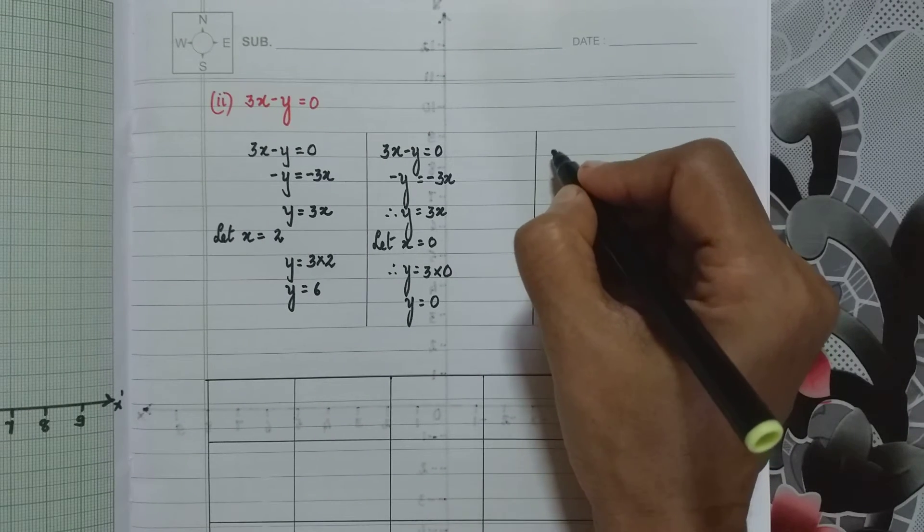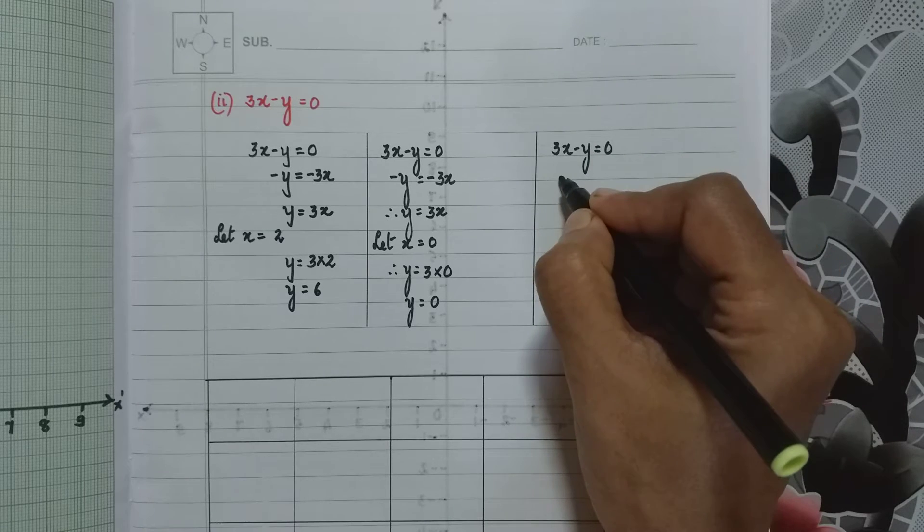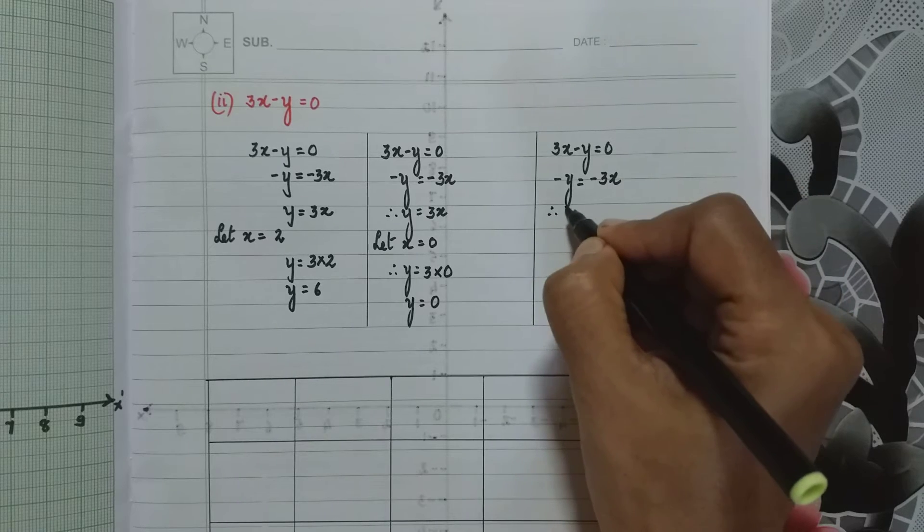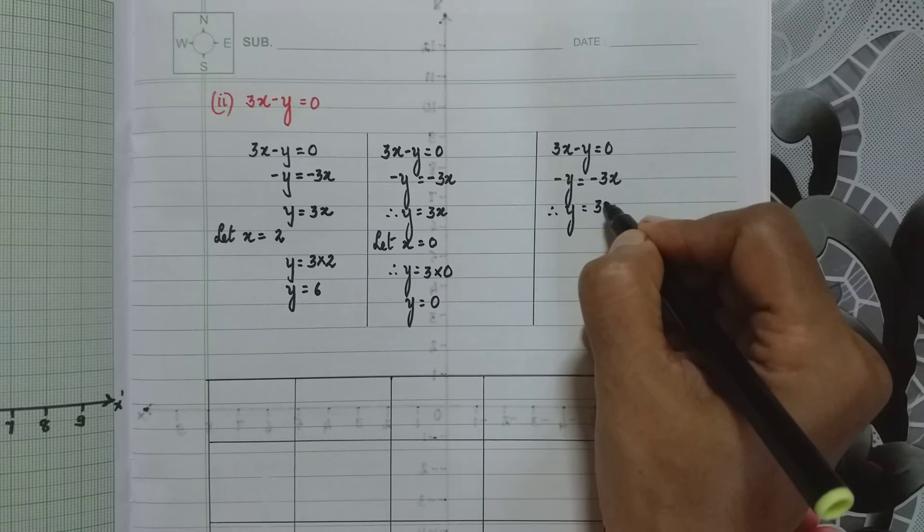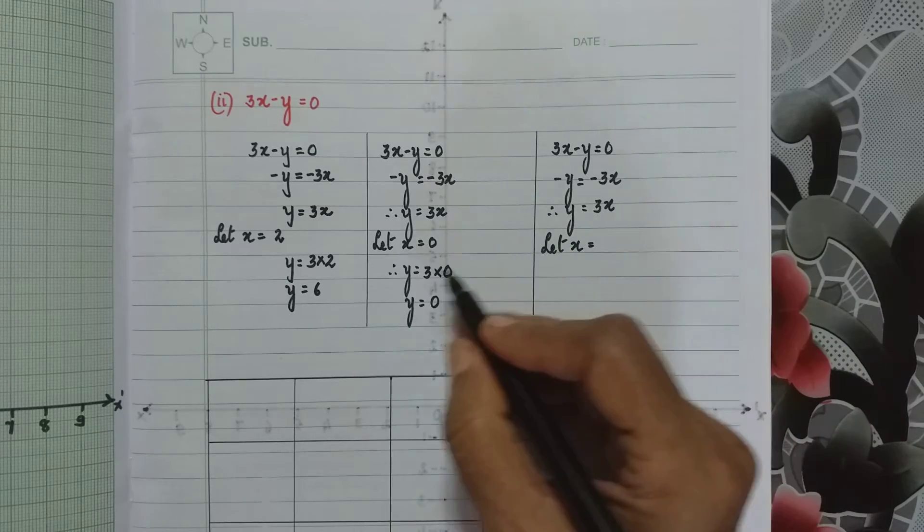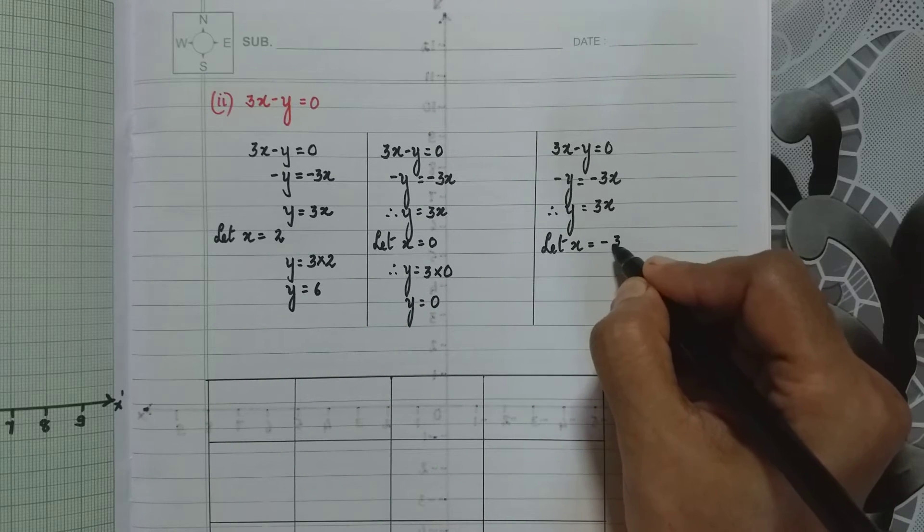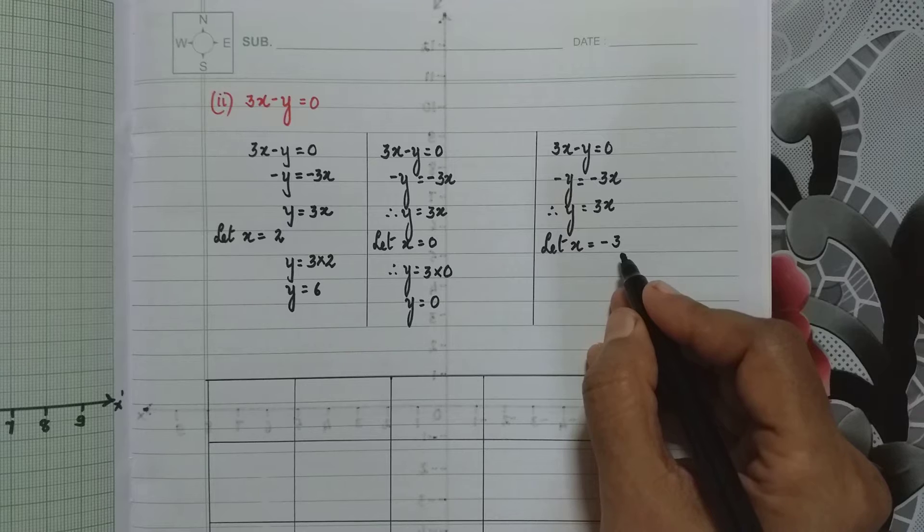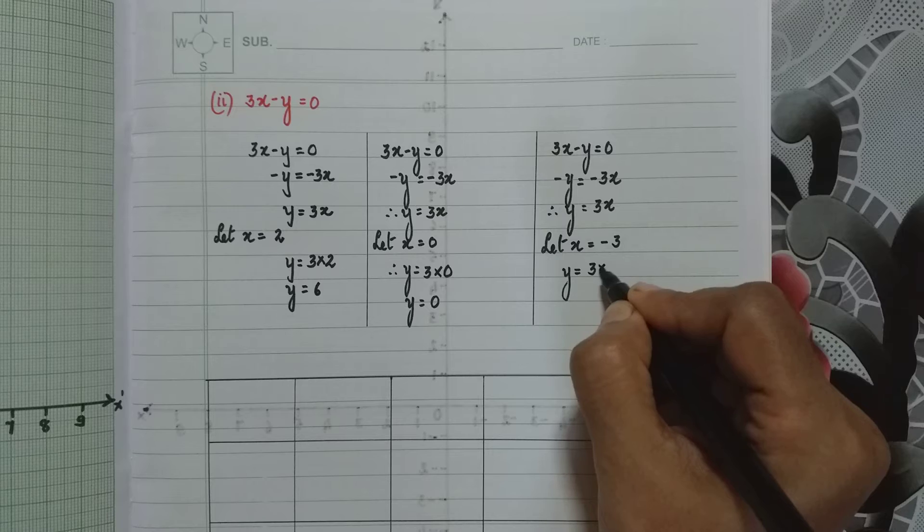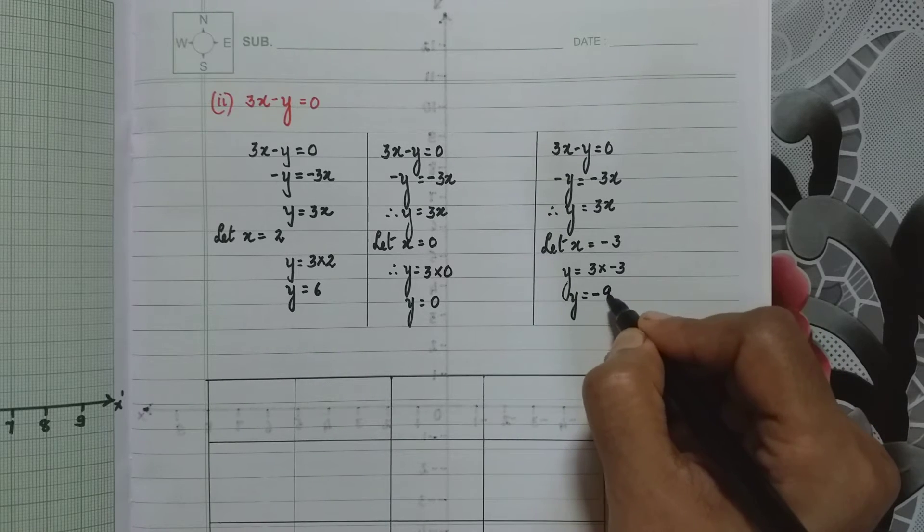Going next to the third value which we have to find out. We write the first three steps as it is. Therefore y equals 3x. Now let me take x equals, we took a positive value, 0, and now suppose I am taking minus 3. x is minus 3. y equals 3x, so 3 times minus 3. So y equals minus 9.